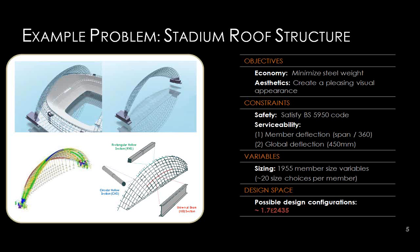In terms of constraints, safety and serviceability are paramount — you're trying to satisfy all strength requirements so the structure doesn't collapse under extreme loading conditions. Serviceability includes the perception of movement in the roof under high winds, so you have deflection and acceleration requirements. The variables the engineer can adjust include member sizing — choosing the cross-sectional areas for all steel members. These include tubes, square sections, and I sections.